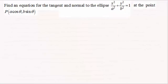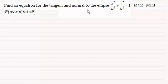Hi there. Now it's very common to be asked to find an equation for a tangent and normal to an ellipse at a point, say P, which is given in parametric coordinates. X is A cos theta and Y is B sine theta.